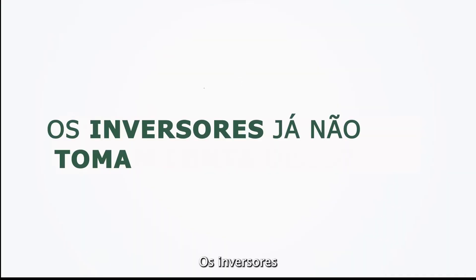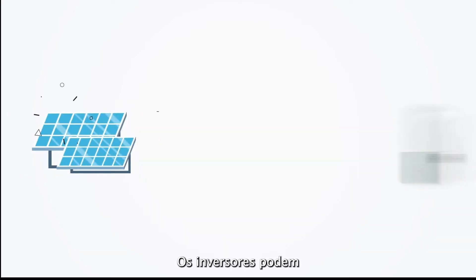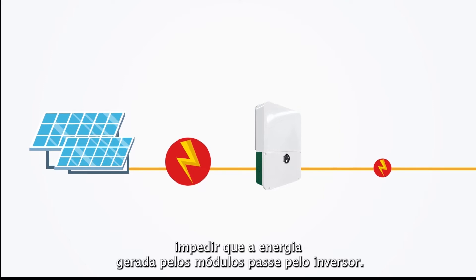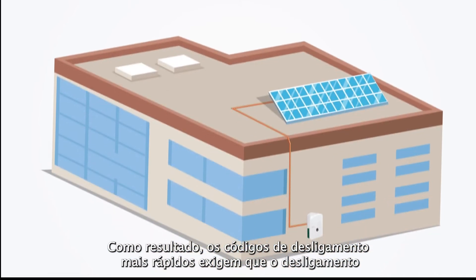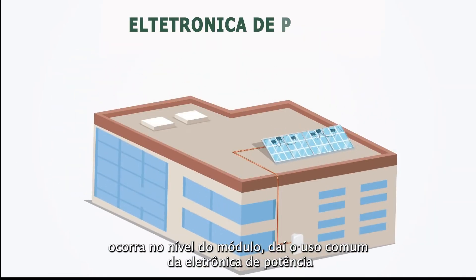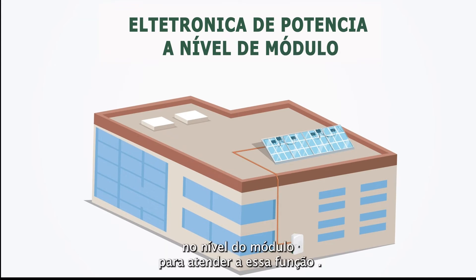Do inverters already take care of this? Inverters can prevent energy generated by the modules from getting past the inverter. However, high voltage can remain between the modules and the inverter. As a result, most rapid shutdown codes require shutdown to occur at the module level, hence the common use of module-level power electronics to meet this function.